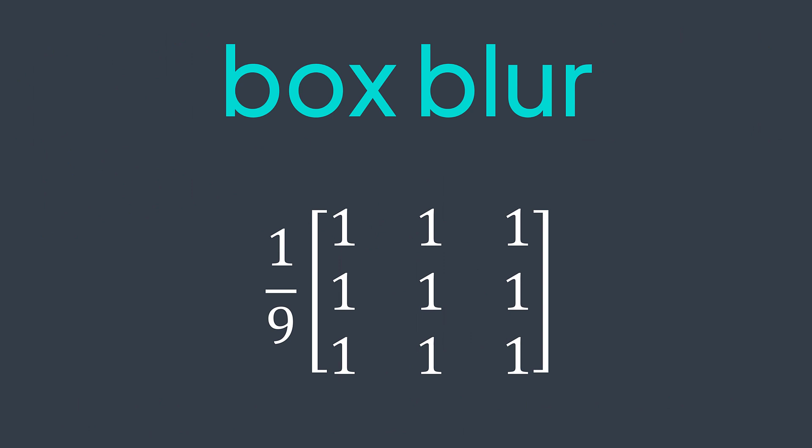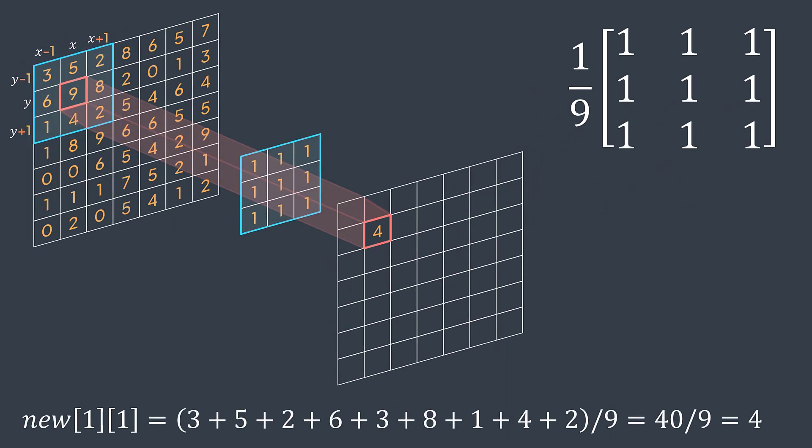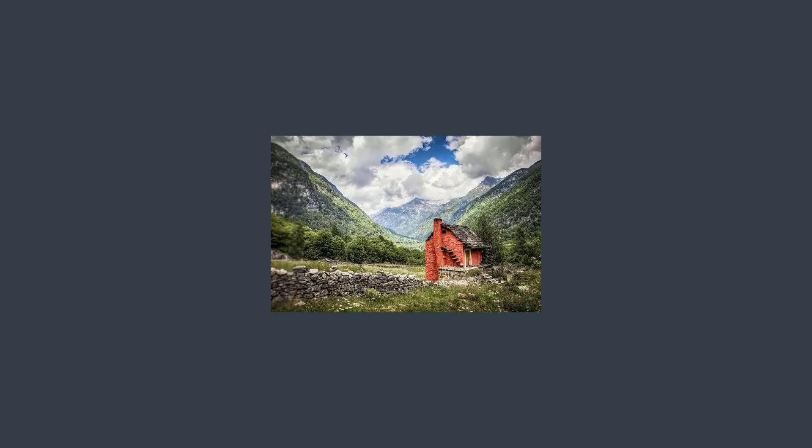And for blurring, same logic — it just uses a different kernel. For box blur, for example, the one we'll learn about today, it has a kernel of all ones (1 1 1 / 1 1 1 / 1 1 1), and the result has to be multiplied by one divided by nine. So for each non-edge pixel, we just do the sum of itself and the pixels around it and divide by nine. After performing this operation on each non-edge pixel, we get the image blurred by using box blur.